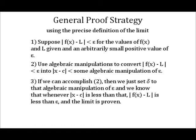And third, if we can accomplish number 2, then we just set delta to that algebraic manipulation of epsilon. And we know that whenever the absolute value of x minus c is less than that, then the absolute value of f of x minus L is less than epsilon, and the limit is proven.